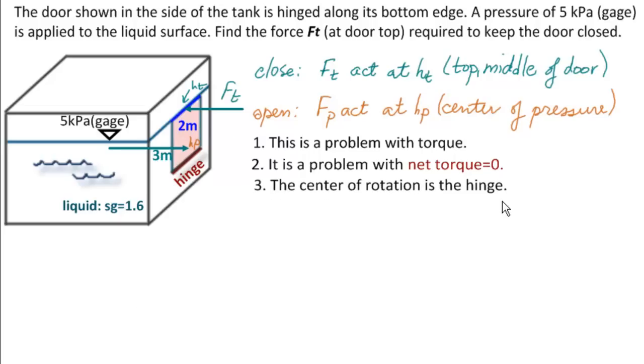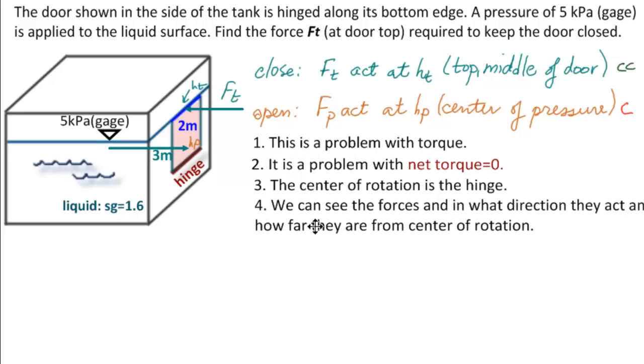We want the door to not move. The nice thing about this torque problem is it's very clear that the center of rotation is the hinge. Ft is acting counterclockwise. We know its distance from the center of rotation is the height of the door. On the other hand, Fp from inside is acting clockwise.